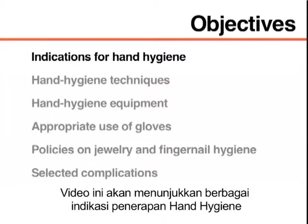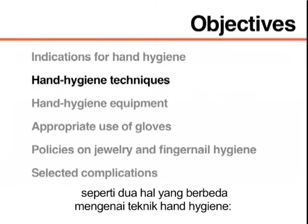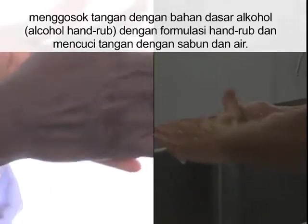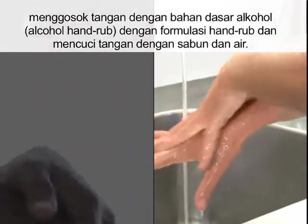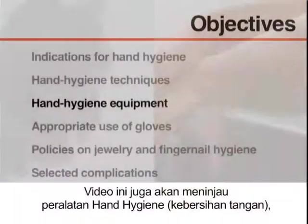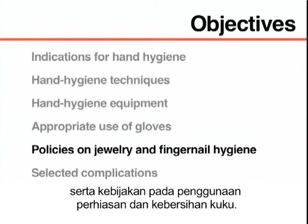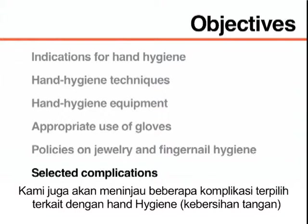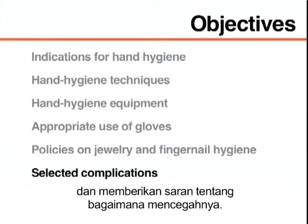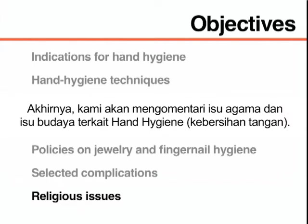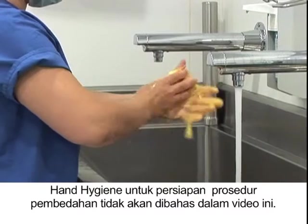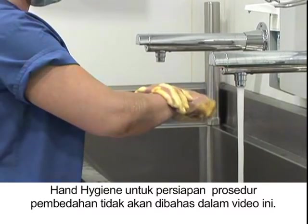This video will demonstrate the various indications to perform hand hygiene as well as two different hand hygiene techniques: hand rubbing with an alcohol-based hand rub formulation and hand washing with soap and water. This video will also review hand hygiene equipment, the appropriate use of gloves, and policies on jewelry and fingernail hygiene. We will also review selected complications associated with hand hygiene and comment on religious and cultural issues. Hand hygiene to prepare for surgical procedures will not be addressed.